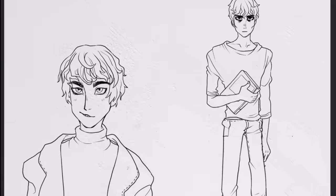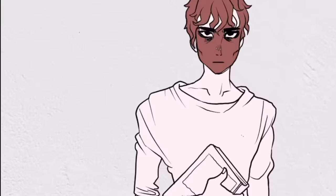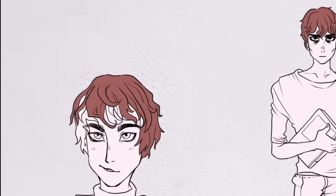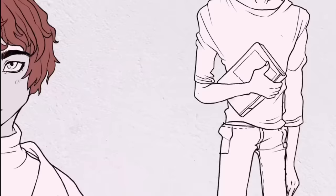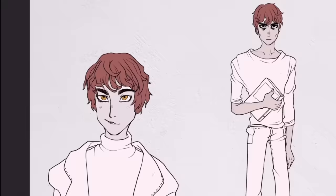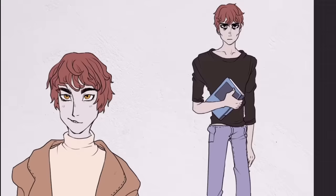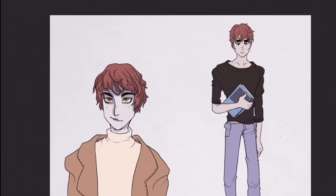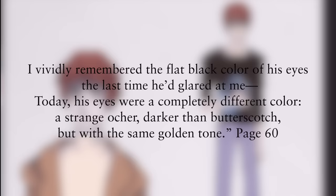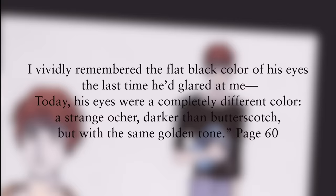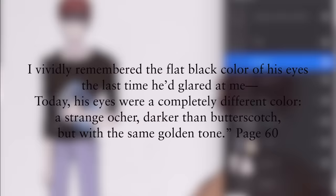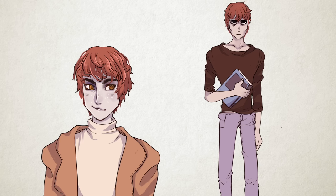Edward has two different modes. One I'll call his 'hangry mode' — when his eyes are black and he's really hungry for blood — and then there's his special anime eyes mode where he has eyes the color of butterscotch. The more full body shot of him I decided to do as Bella's first impression of him when he's really hungry. On page 60 she says: 'I vividly remember the flat black color of his eyes the last time he glared at me. Today his eyes were a completely different color, a strange ochre, darker than butterscotch, but the same golden tone.' His eyes oscillate between those two colors and even get as light as honey at certain points, so I wanted to feature both.